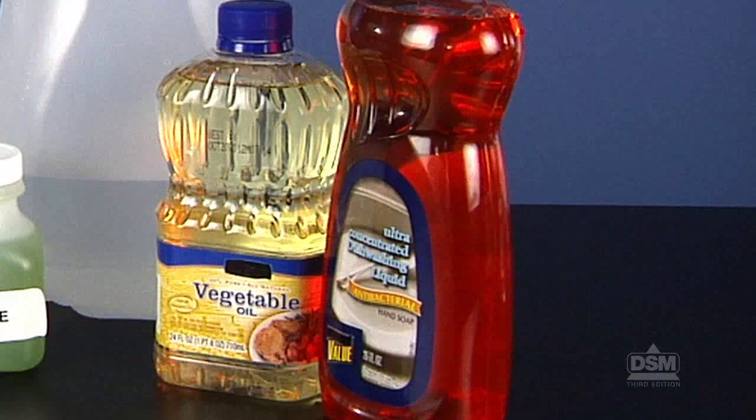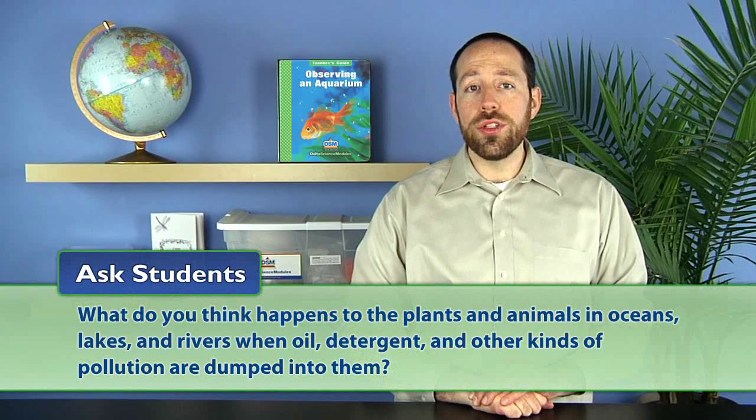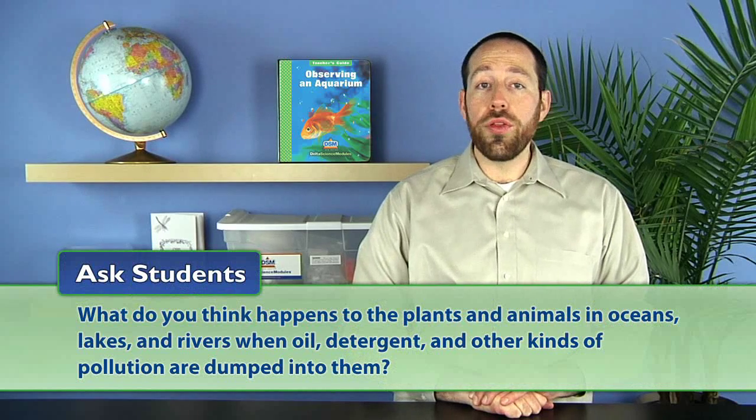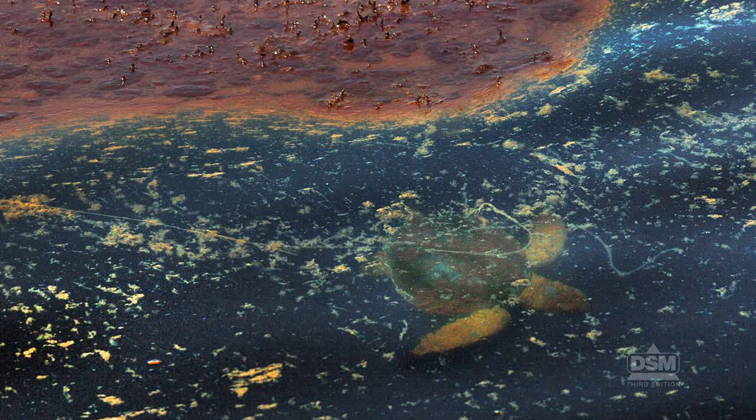Next, inform students that the oil and the detergent are two types of pollution. Help students recall that plants and animals need air, water, and food to survive. Then ask students, what do you think happens to the plants and animals in oceans, lakes, and rivers when oil, detergent, and other kinds of pollution are dumped into them? They should understand that the plants and animals eventually die.